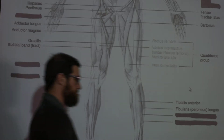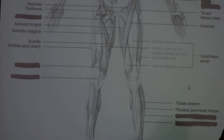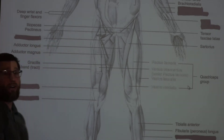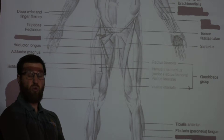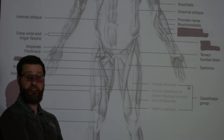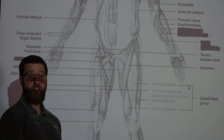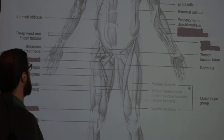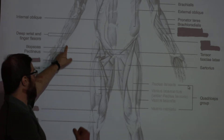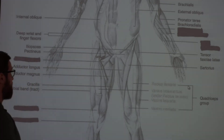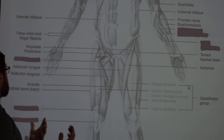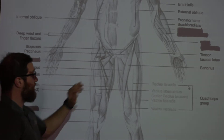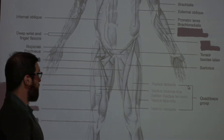The deep wrist and finger flexors are in your forearm. There are many muscles involved in wrist flexion and extension, but we won't go through all the individual ones — that is saved for first and second-year anatomy courses. For now, just know them as your finger flexors. That covers the basic upper body anterior muscles; now we're moving down to the lower body.